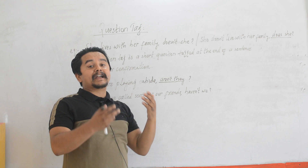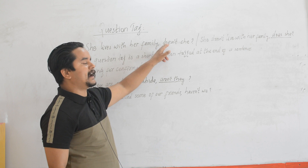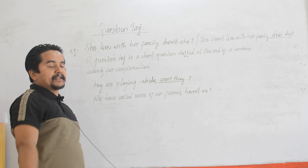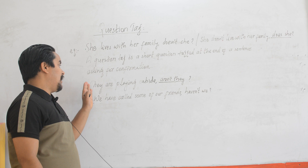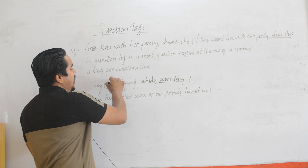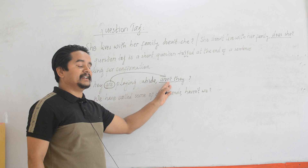Another example I have written here: 'They are playing outside, aren't they?' Now here, the most important thing is you have to find the verb and the subject of the sentence. The verb here is 'are'. The same 'are' has to be used in the question tag. Since the sentence is affirmative, I have made it negative here. And the subject here is 'they', so the subject of the question tag is also 'they'.